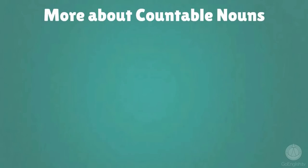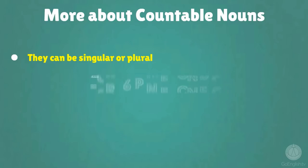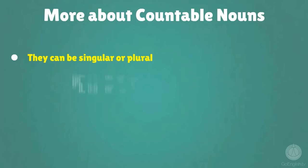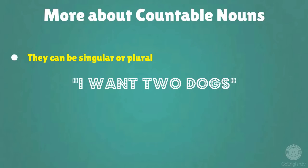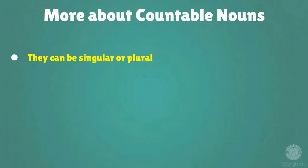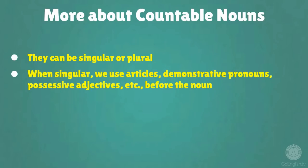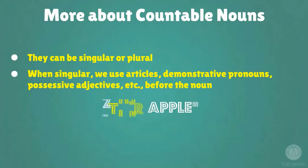More about countable nouns. They can be singular or plural. I want a dog. I want two dogs. When singular, we use articles, demonstrative pronouns, possessive adjectives, etc. before the noun. An apple. This apple. Your apple.